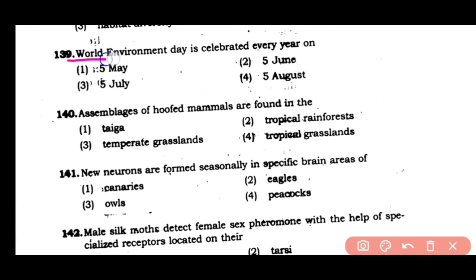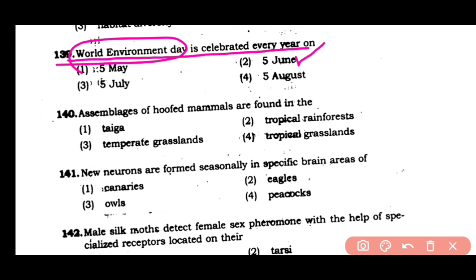Question number 139: The World Environment Day is celebrated every year on — (1) 5th of May, (2) 5th of June, (3) 5th of July, or (4) 5th of August. The correct answer is option 2. Every year, 5th June is celebrated as World Environment Day.